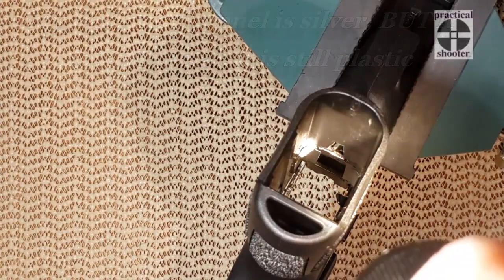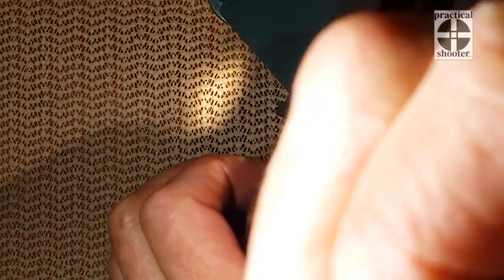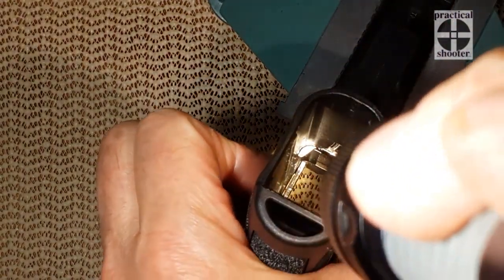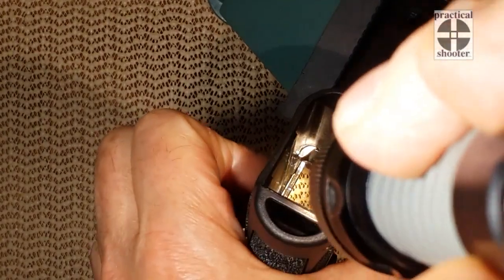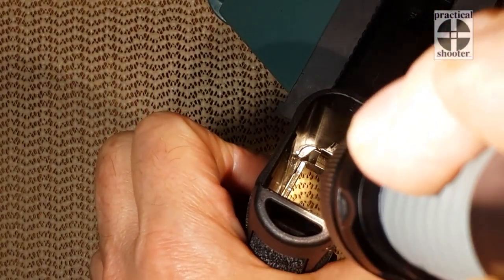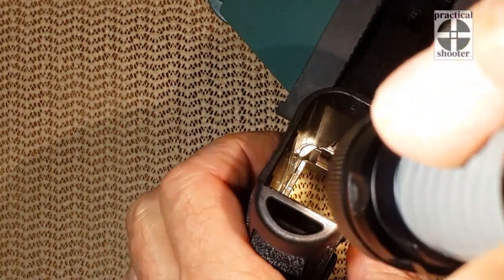So here you can see the pin which is really a spring. It allows the magazine release to come back into position and the little pin I told you about to allow the magazine release to bottom out and not come out of the grip.